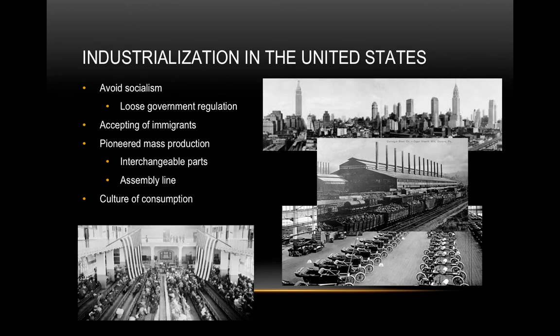We have things like interchangeable parts that allow for quick assembly so that you don't have to assemble everything at the factory, or if something breaks, you can just change and fix it, especially with large machines. We also invent the assembly line, invented by Henry Ford with his Ford Motor Company, and that allows for an automobile to be made much, much faster. That's what makes the car such a popular thing in the U.S. and why it becomes such a driving force of U.S. culture, because they became so cheap.